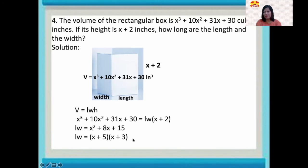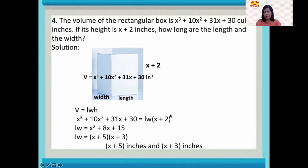So the length is (x plus 5) inches and the width is (x plus 3) inches. To check, we multiply (x plus 2) by (x plus 5) by (x plus 3), and it equals x cubed plus 10x squared plus 31x plus 30, which confirms our answer.